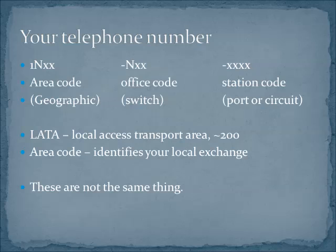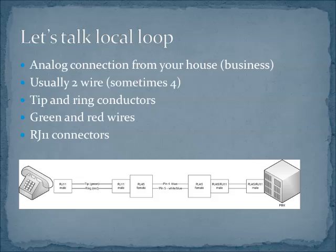The area code and the office code — all of these phones that are part of the local connection, or what we call the local loop, will all have those numbers the same. The real big difference will be in the station code, which identifies that circuit. Here we have a layout, generally, of a local loop.